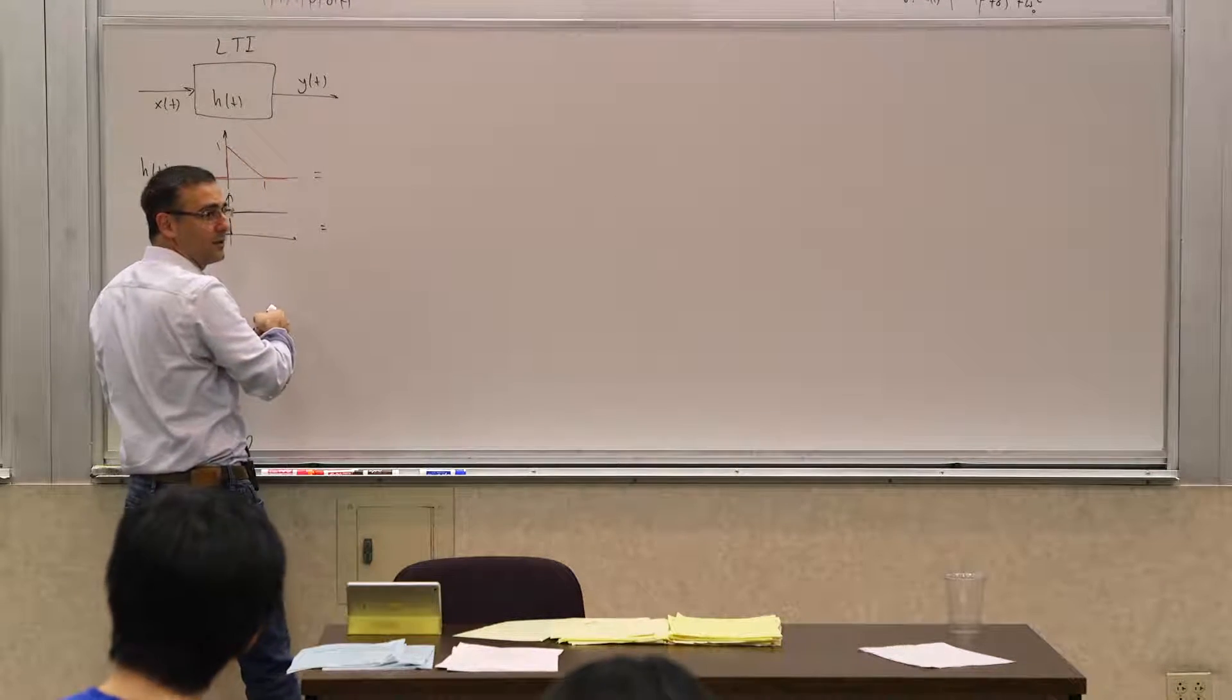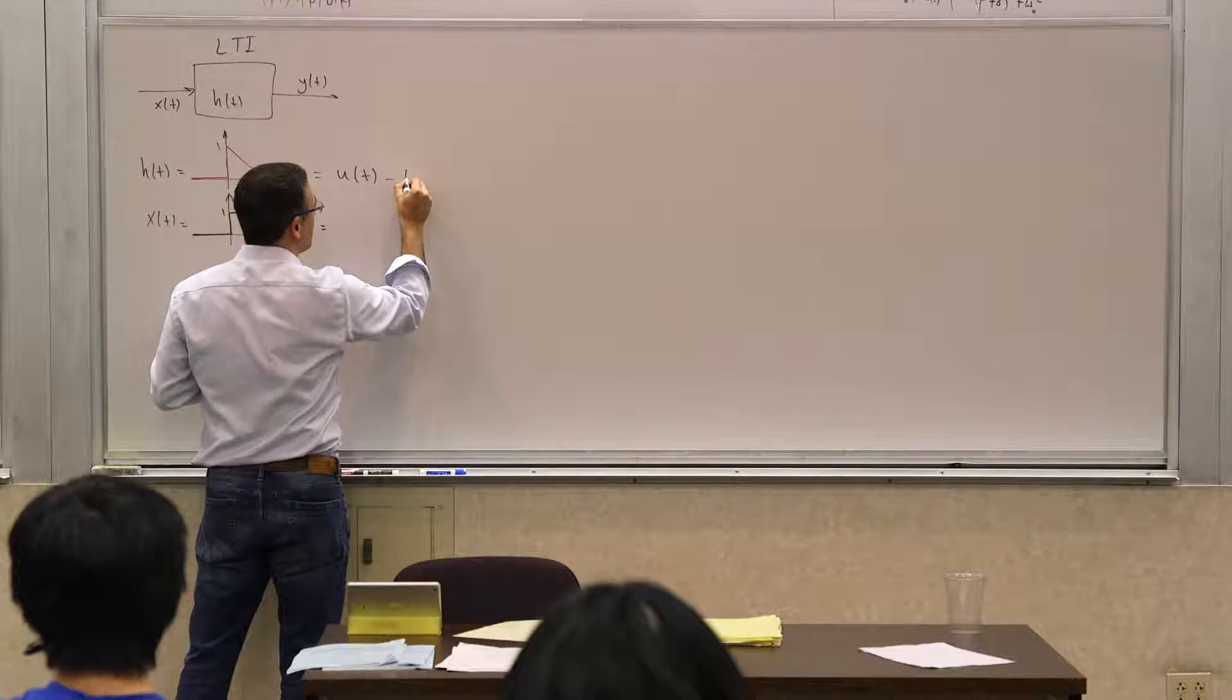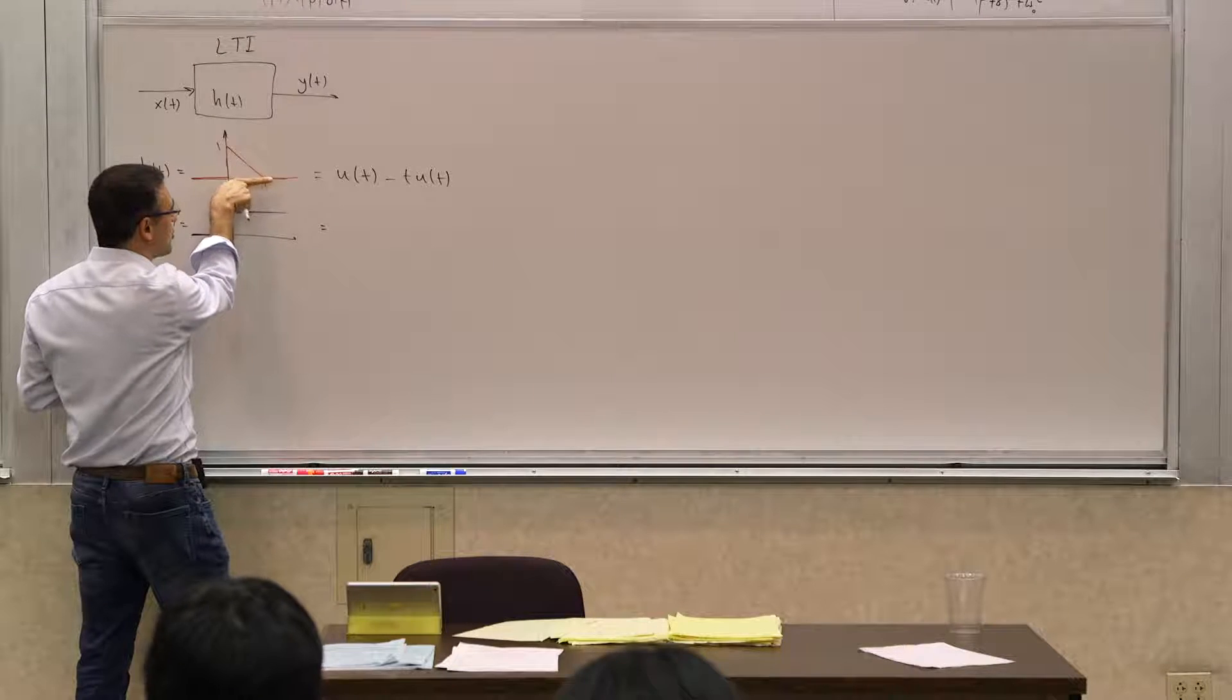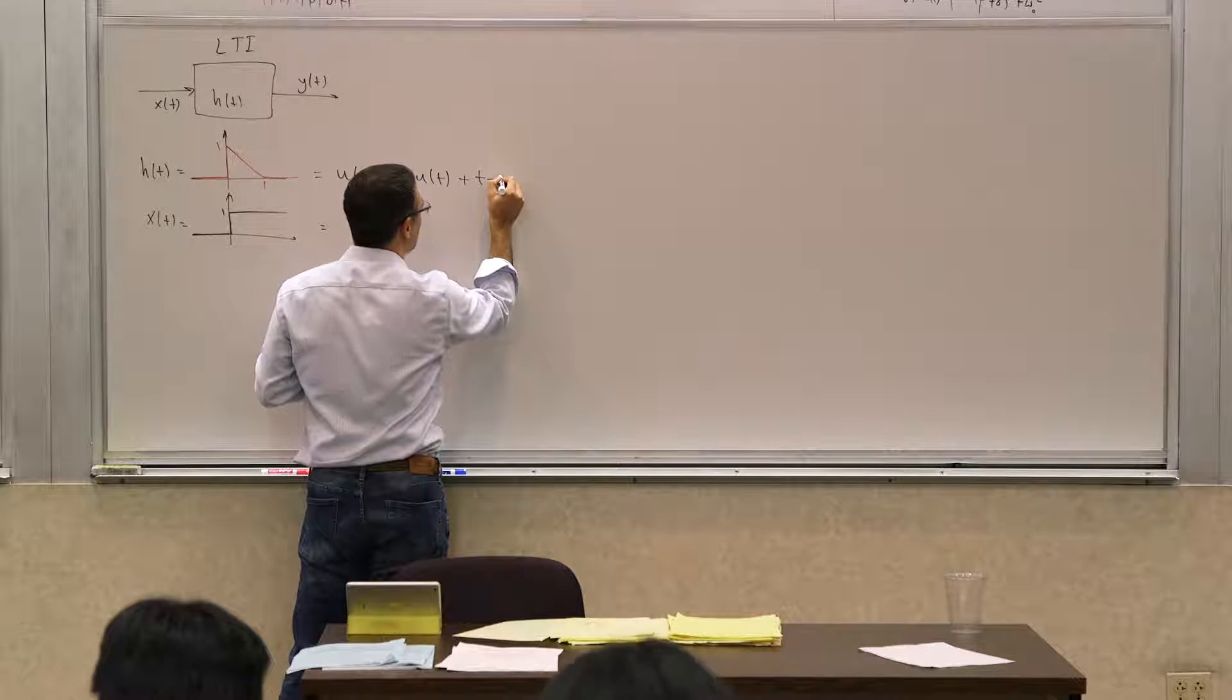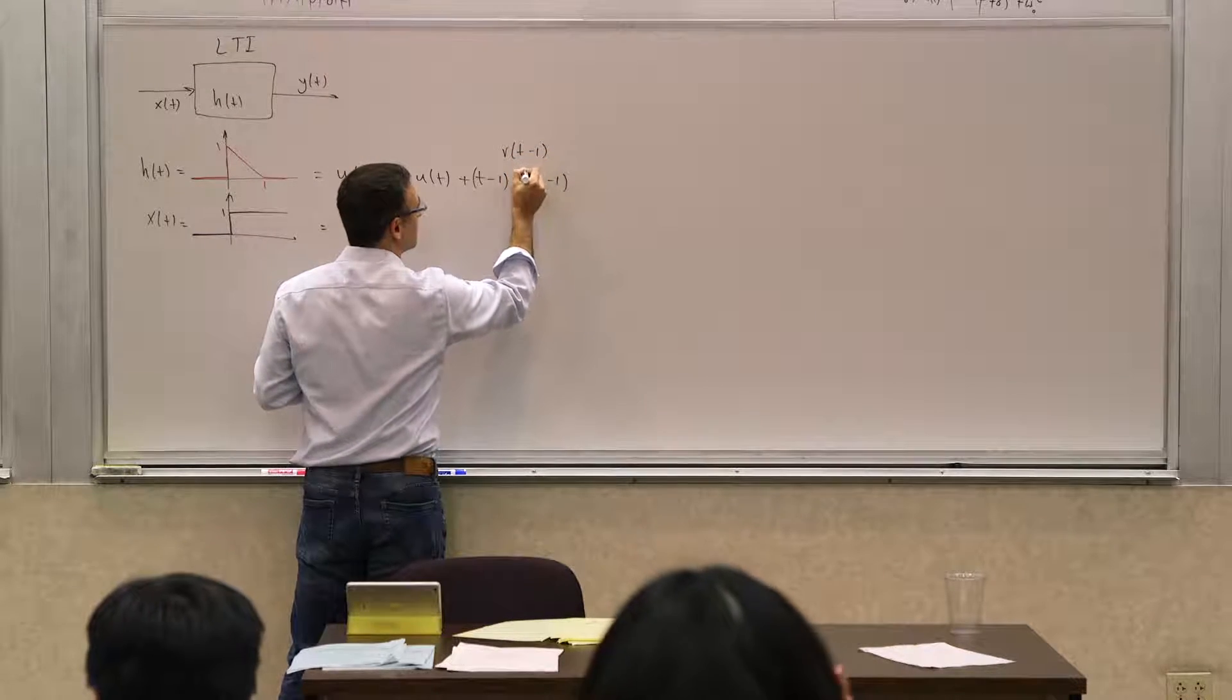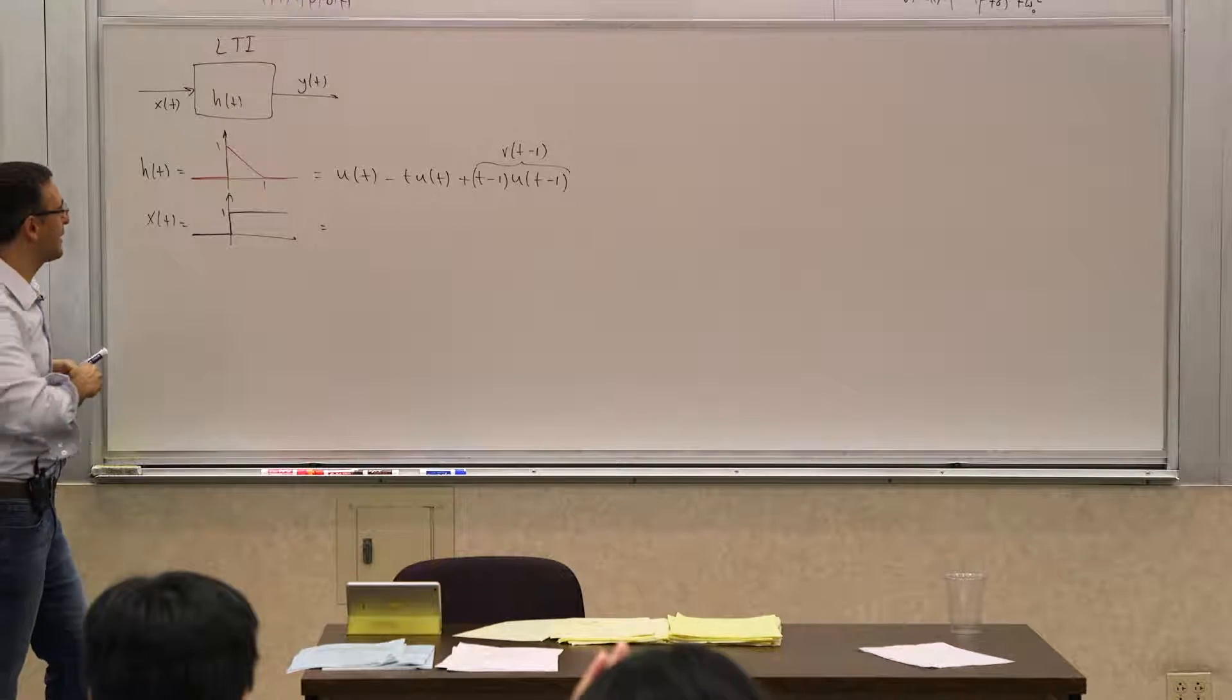Well, you have a step here first, so you can write it as u of t, and then you have to have a negative ramp minus t u of t, or r of t, and that would keep going all the way down, so you have to stop it at one. Then you have to have plus t minus one u of t minus one, which is r of t minus one. Agreed? That I can write that into those terms.